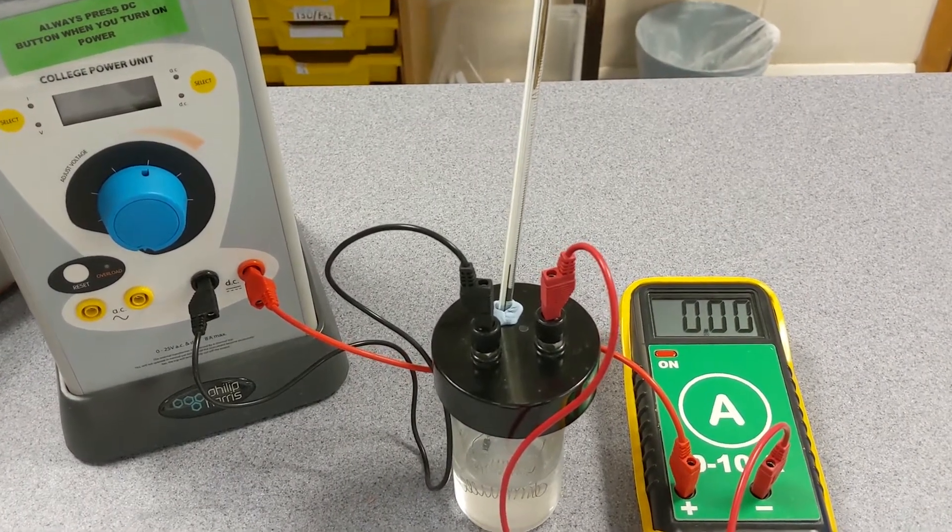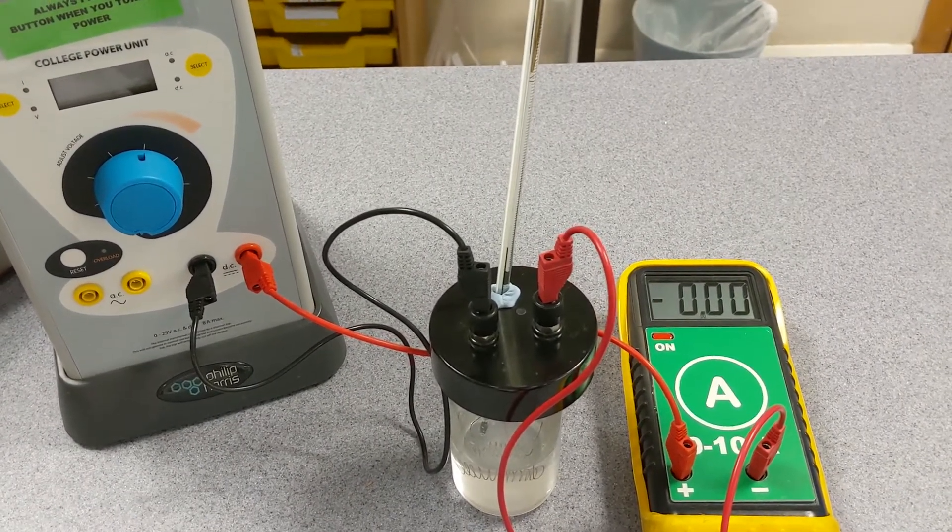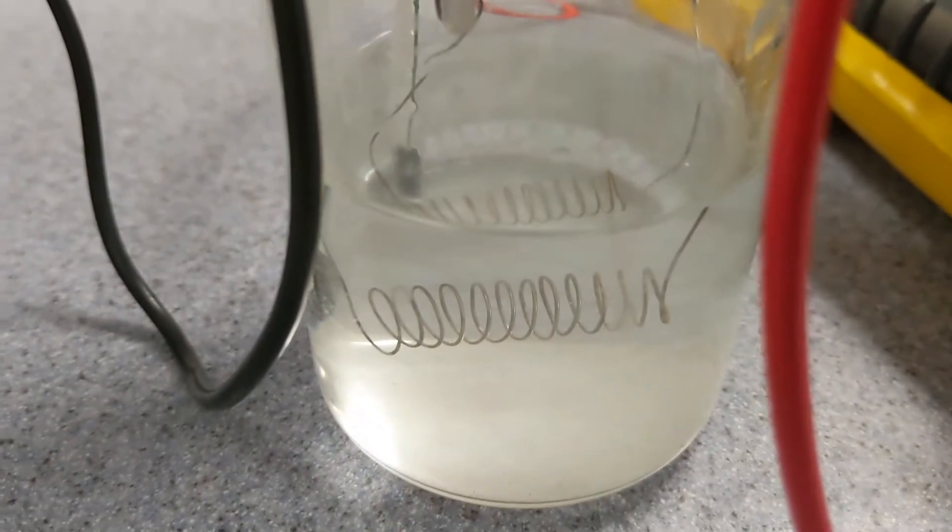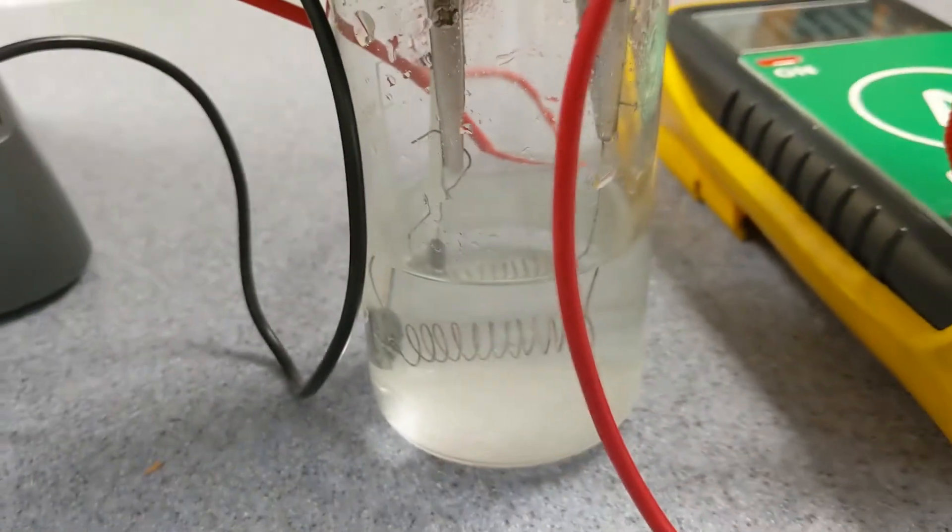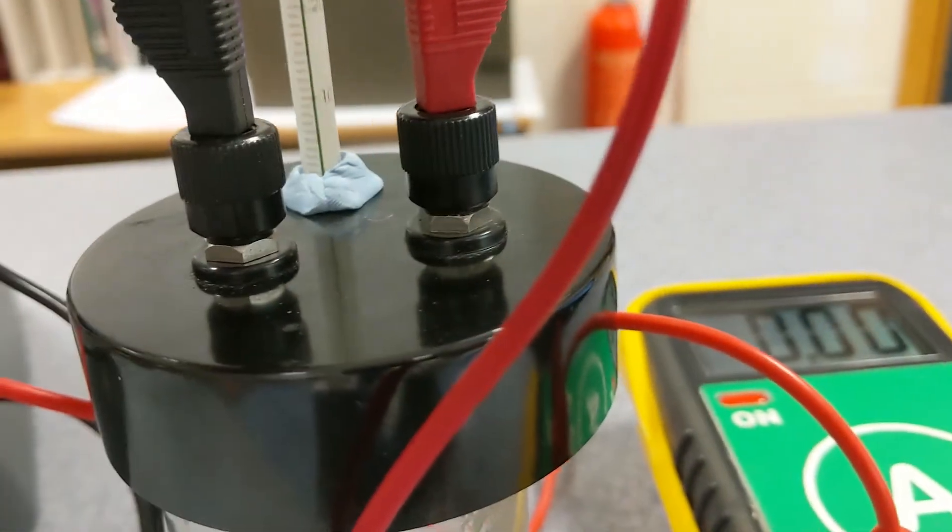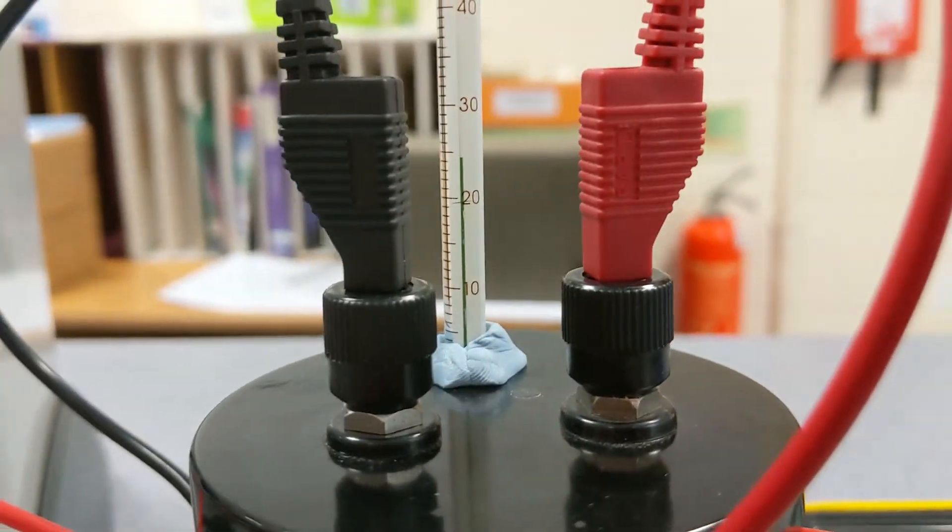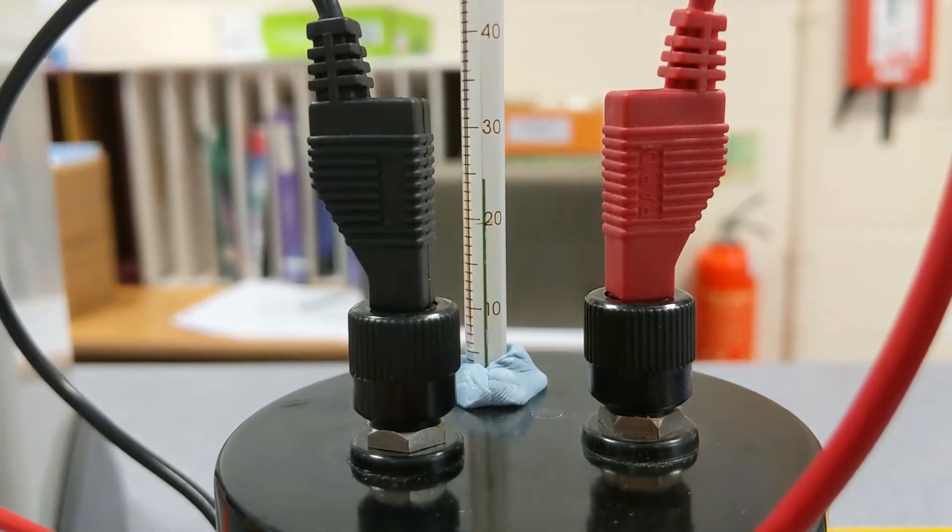What we have here is a simple demonstration to observe the heating effect of current. In there we've got a coil of nichrome wire in some water, and a thermometer currently reading that temperature.